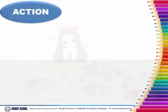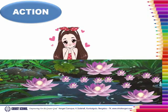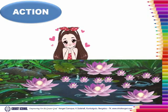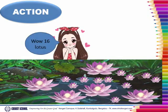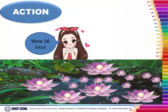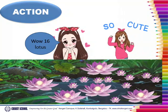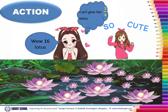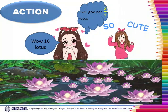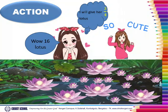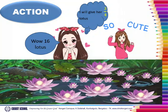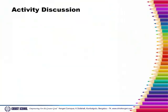Let us do a small activity. Seema was sitting beside a pond and counted 16 lotus. She gave 3 by 4 of the lotus to her friend. What fraction of lotus did she give to her friend? Let us have an activity discussion: 3 by 4 of 16 lotus.